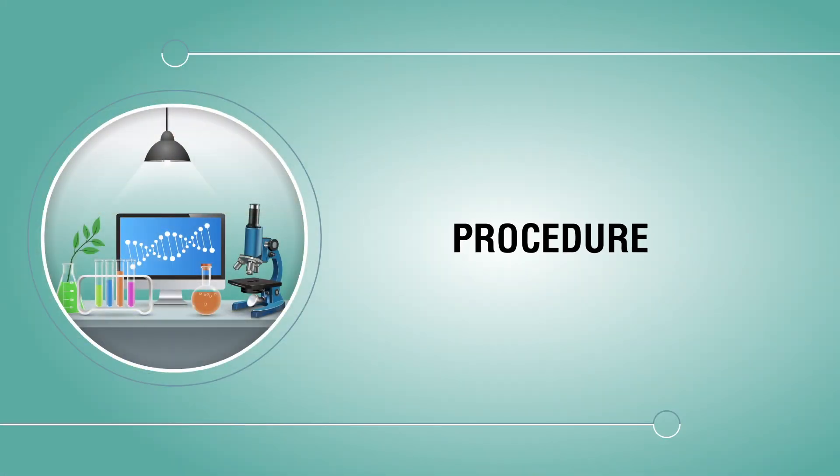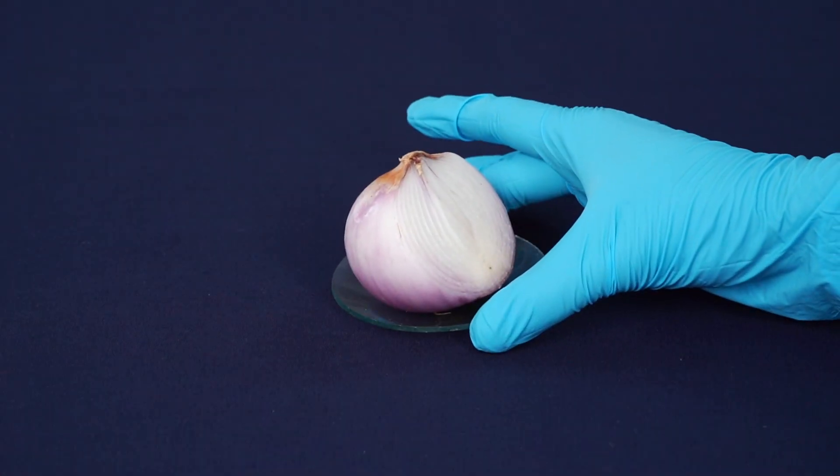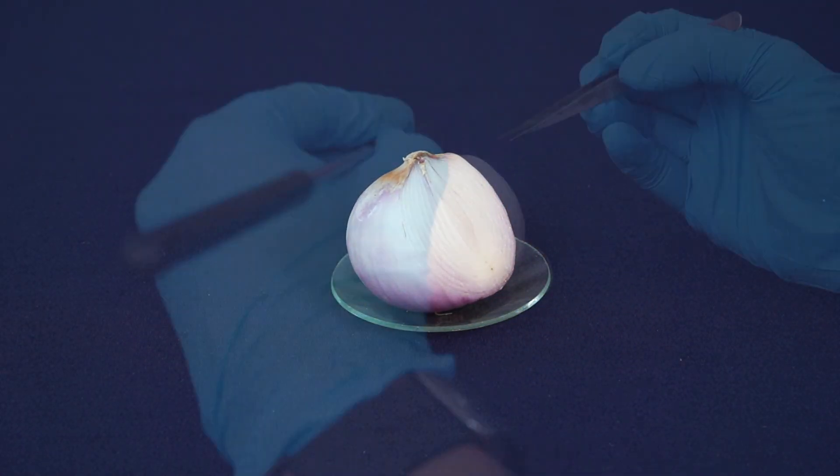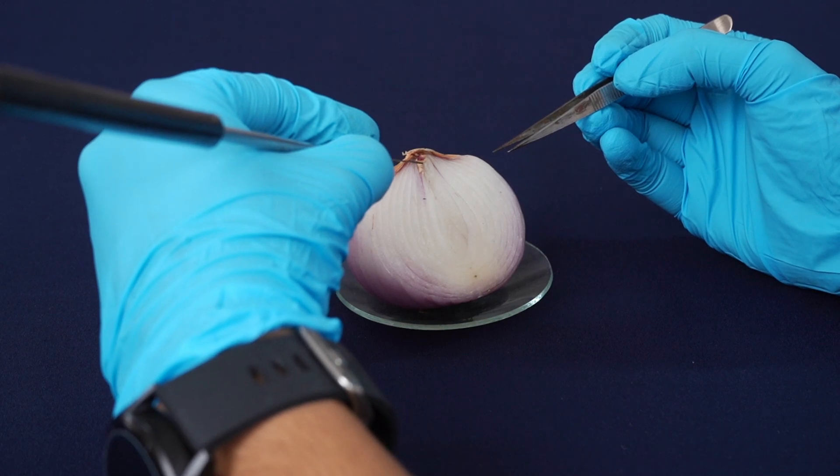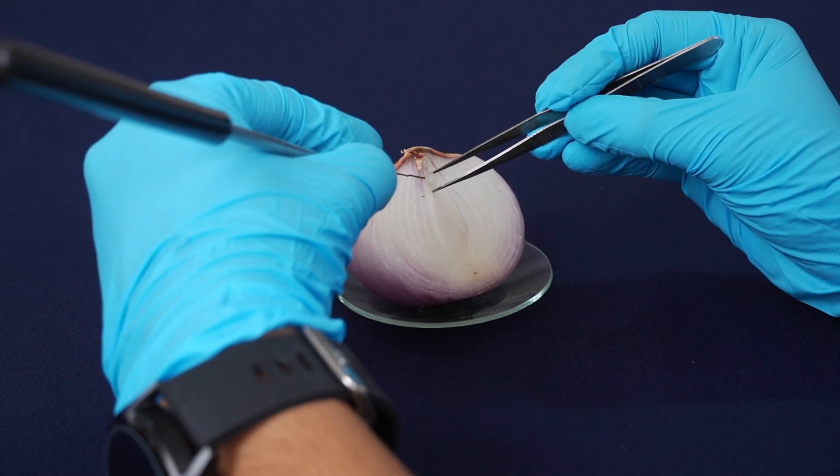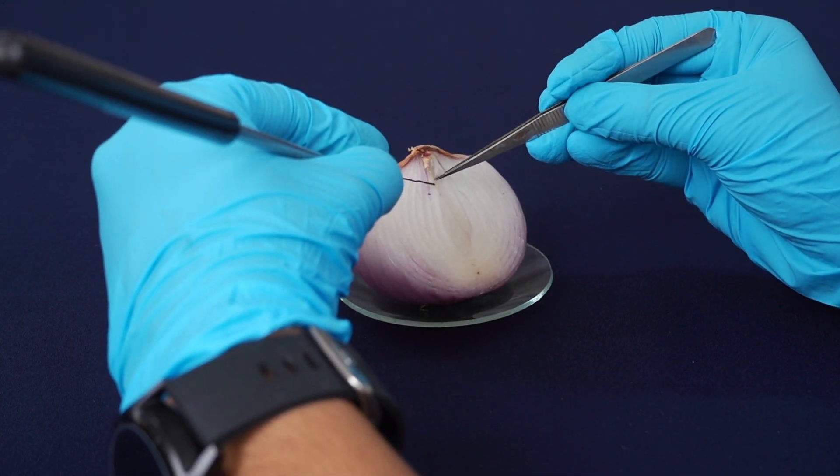Procedure: Take a fresh onion kept in watch glass. Cut out a small piece of the epidermal peel using the needle and take it out with the aid of forceps.